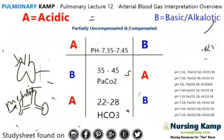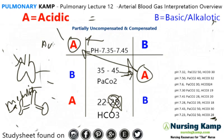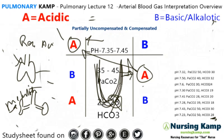Last example: pH of 7.23 — that's over on the acidic side. We have a PaCO2 of 50, also over there. Then we have a bicarb of 28 — in the middle. We connect these two together: we have an acidosis condition in the respiratory area, and it's uncompensated respiratory acidosis.